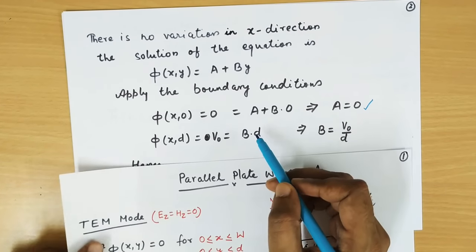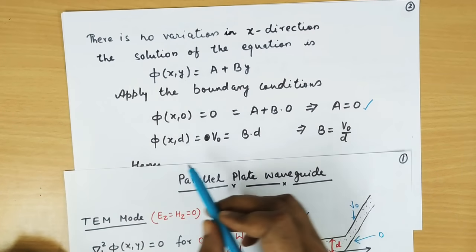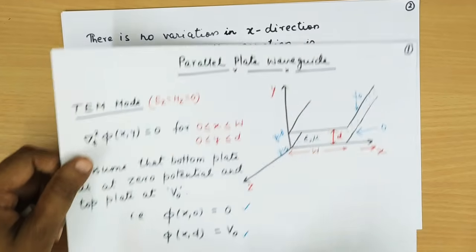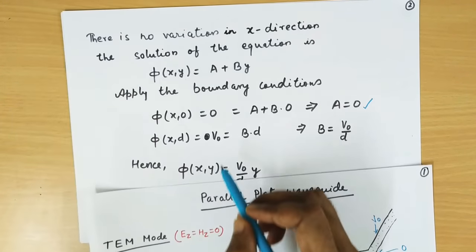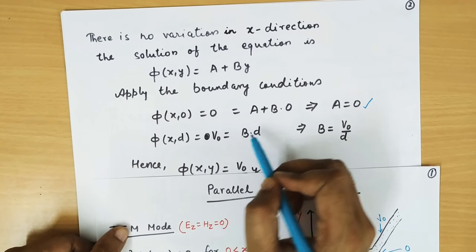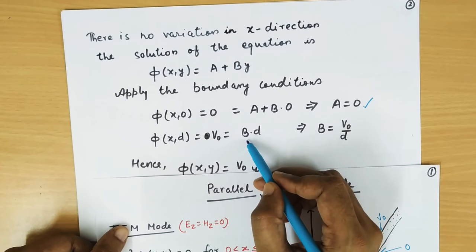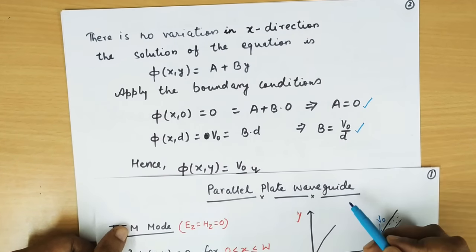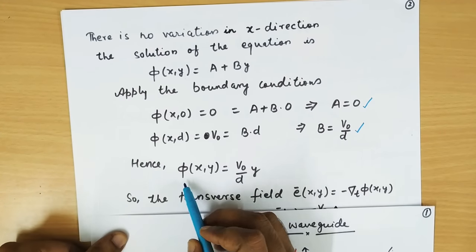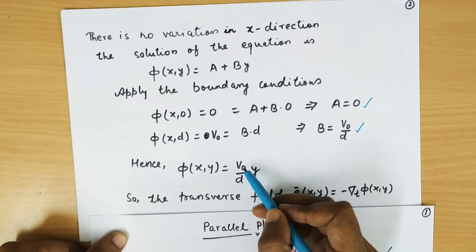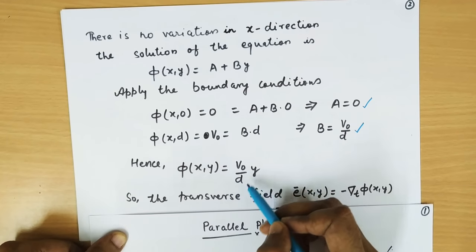So if A is 0, we have only phi(x,y) equal to By. Now let us apply the second boundary condition which says phi(x,D) is V0 at y equal to D. So when we put y equal to D, the potential is V0, hence the second constant B is V0 divided by D. Applying this constant in our solution, phi(x,y) equals By, and B is V0 over D, so it is V0y over D.